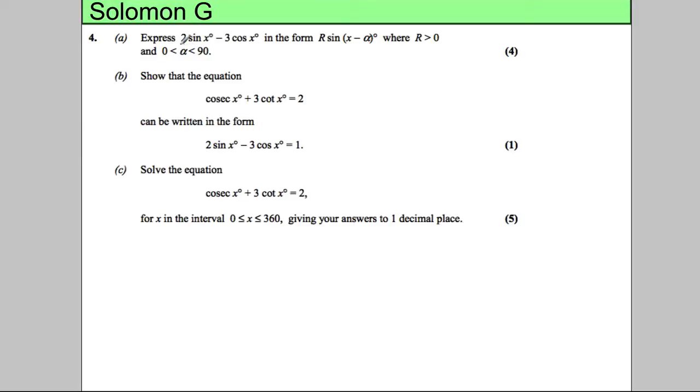In this question we're asked to express 2 sine x plus 3 cosine x, notice the x's are in degrees, in the form r sine x minus alpha, where r is bigger than 0 and alpha is between 0 and 90. Not radians in this case. Same old stuff though.